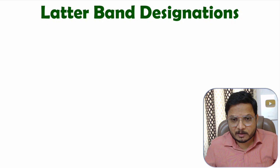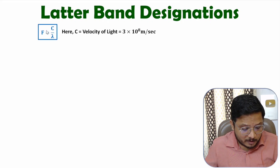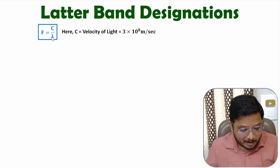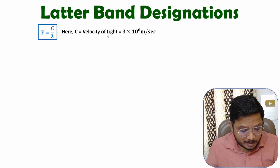First of all, one should know the basic equation of frequency with respect to wavelength. Frequency is C divided by lambda, where C is the velocity of light, that is 3 × 10⁸ meters per second. And based on frequency, one can easily calculate lambda.